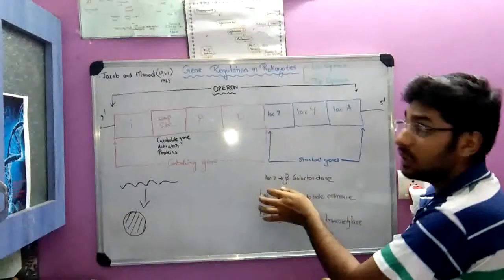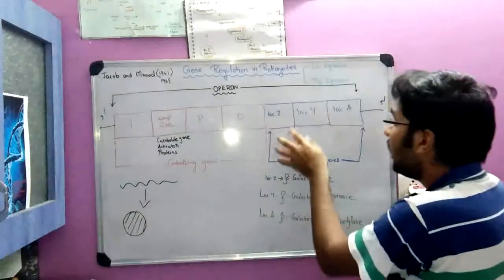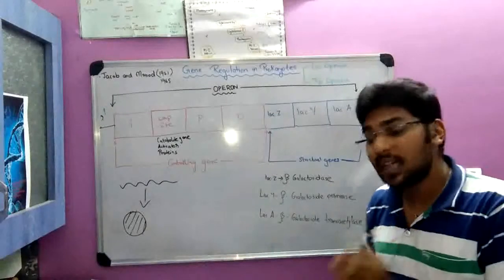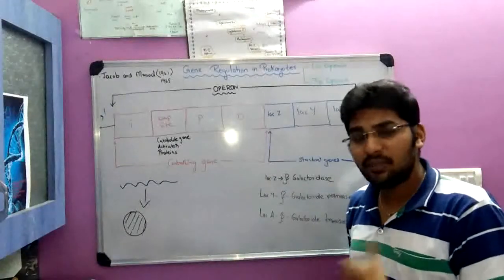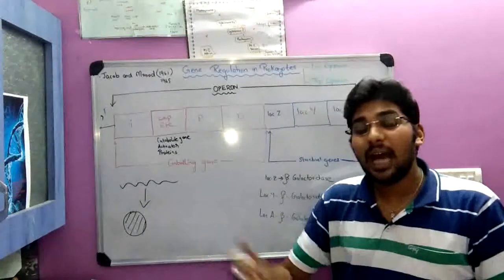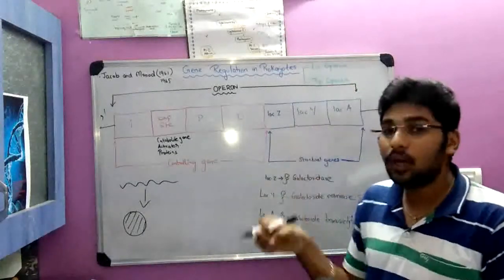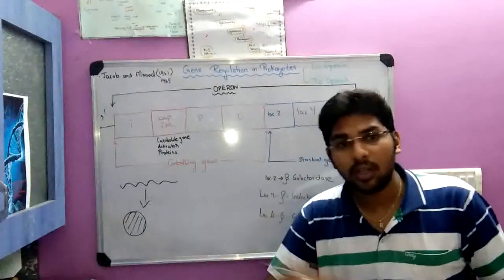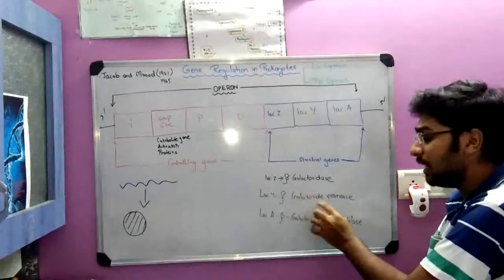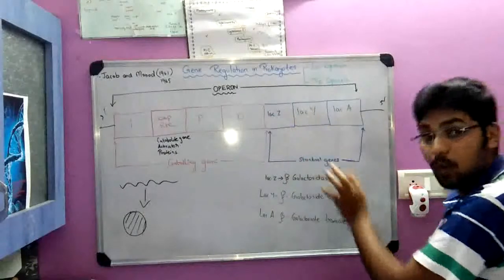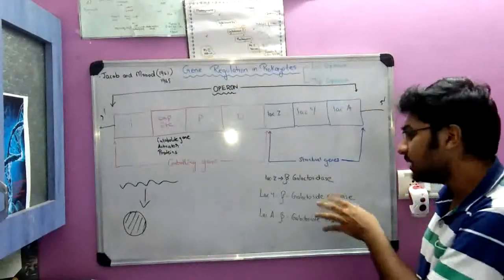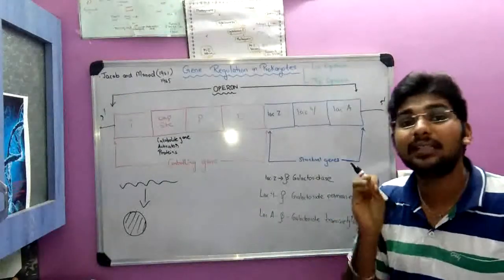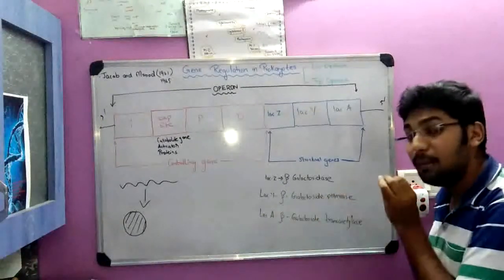Lac Y transcribes another enzyme called beta-galactosidase permease. The function of permease is to allow the entry of lactose into E. coli cells. The cell wall of E. coli is semipermeable and does not allow all molecules to enter. Beta-galactosidase permease — the name itself says it permits — it allows lactose to enter into the bacterial cell.